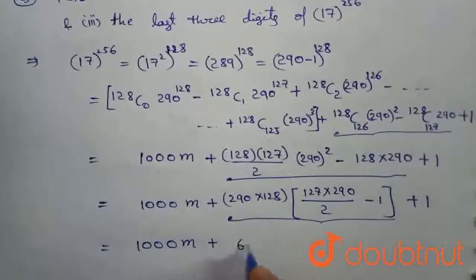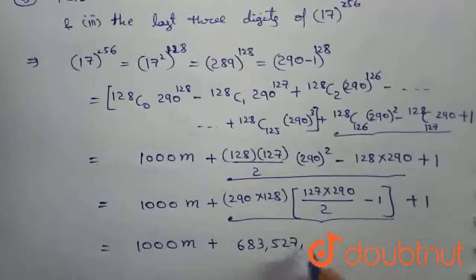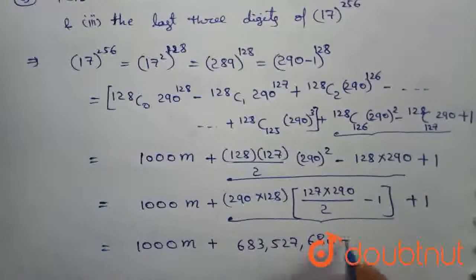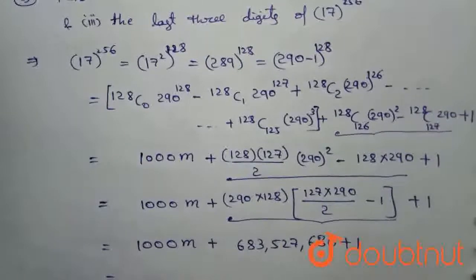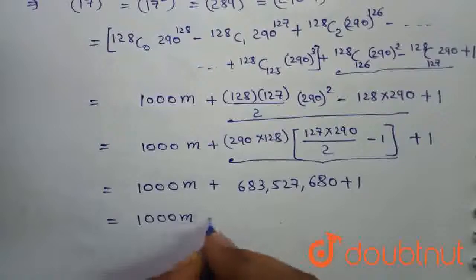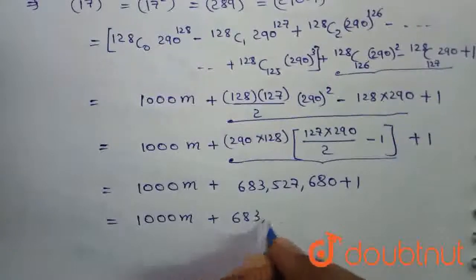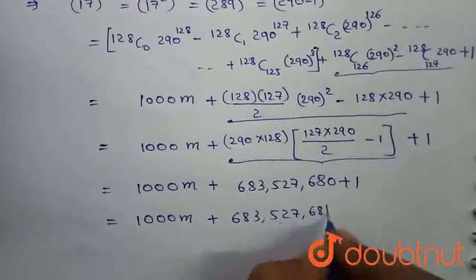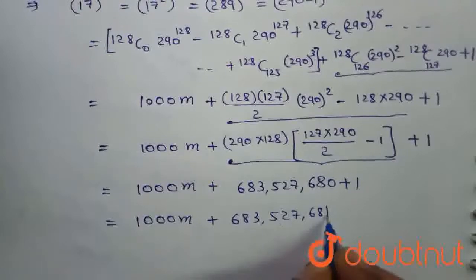we will get 683,527,680 plus 1, which is equal to some 1000 M plus 683,527,681. The last digit is 1.